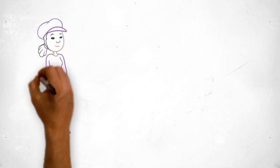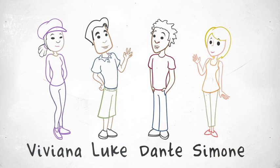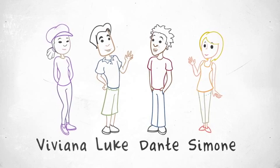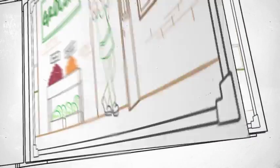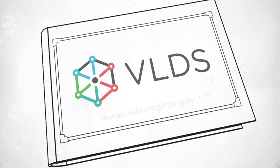So the different choices that Viviana, Luke, Dante, and Simone make can help the rest of us draw conclusions that benefit everyone, all by referring to just one resource, VLDS.